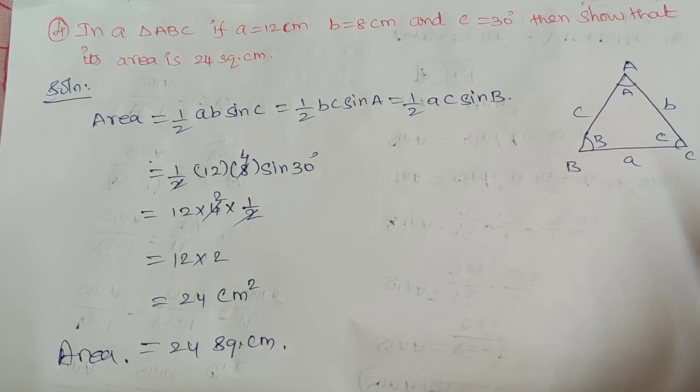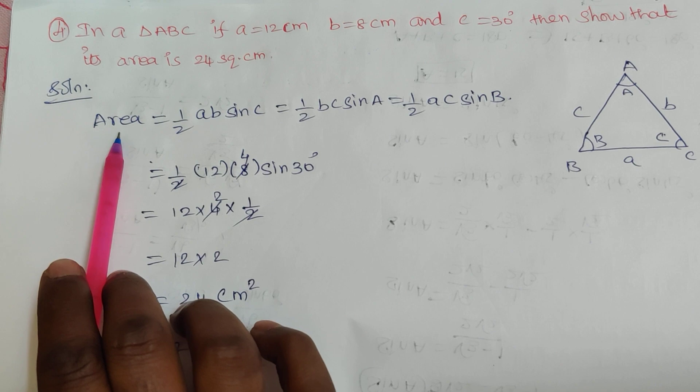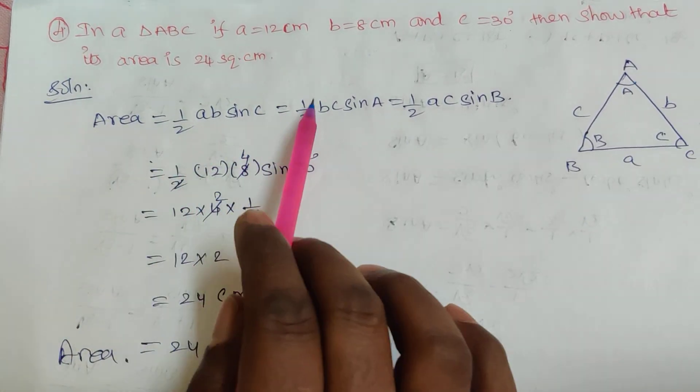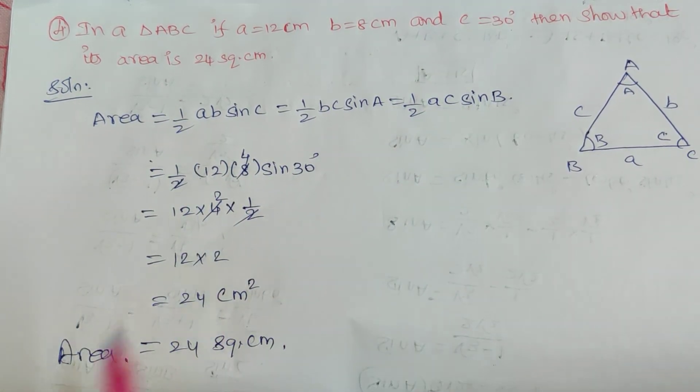So you already know the projection formula. Area equals 1/2 AB sin C. Area equals 1/2 BC sin A. Area equals 1/2 AC sin B. These are the three projection formulas.